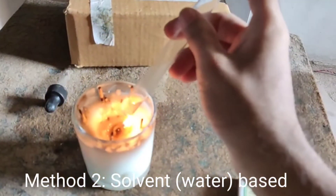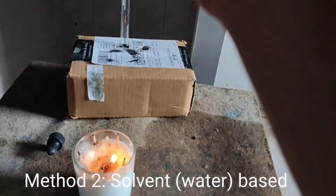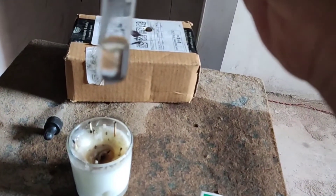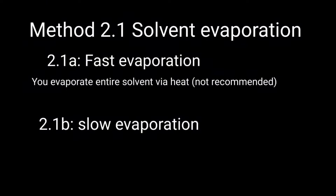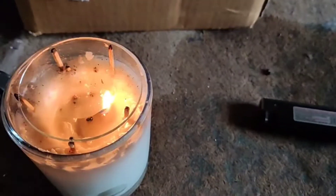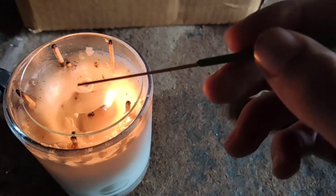The solvent method is different — in it we make a saturated caffeine solution. There are two variants: method 2.1 is fast evaporation and method 2 is slow evaporation. Both have their advantages and disadvantages. Right now I'm going to do fast evaporation. In fast evaporation, we heat up and evaporate the entire solvent. I would not recommend this if you want very beautiful crystals.